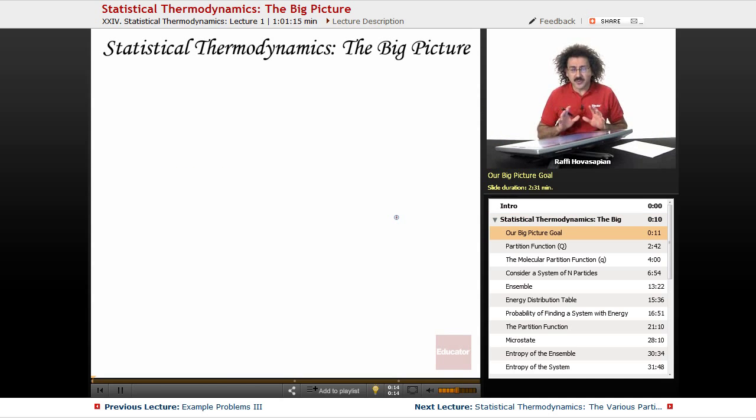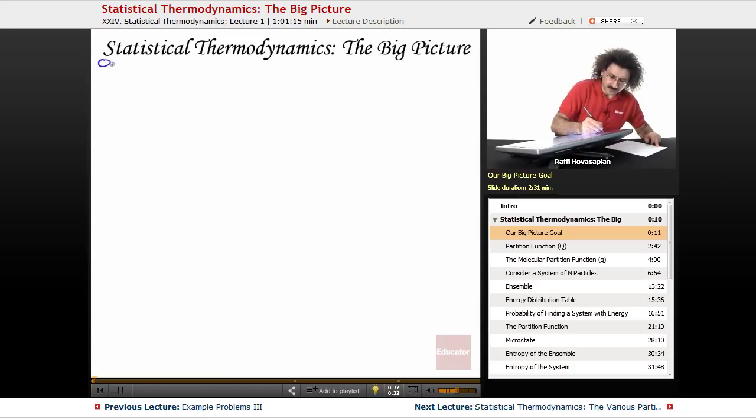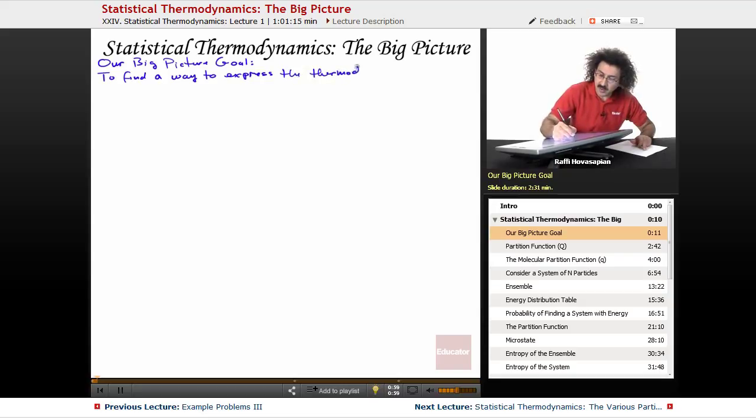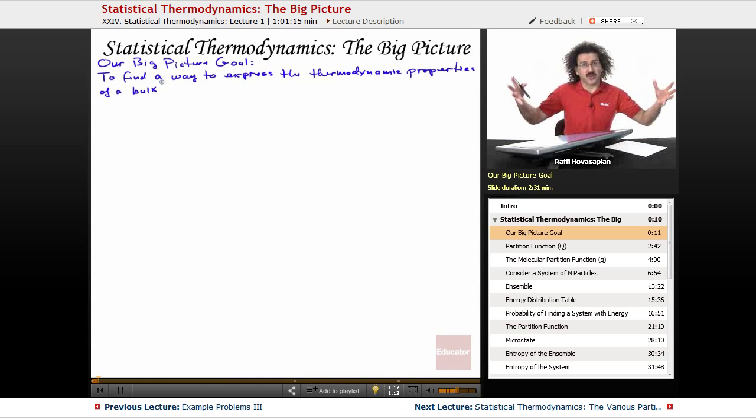Okay, so I wanted to go through this big picture of what statistical thermodynamics is so that we know why we're doing this. What's our overarching goal? What is it that we're trying to achieve? So our big picture goal is to find a way to express the thermodynamic properties of a bulk system. And by bulk, we mean just a bunch of particles, like a block of wood, as opposed to the individual molecules that make up that wood.